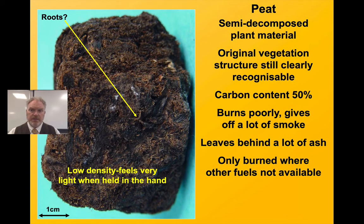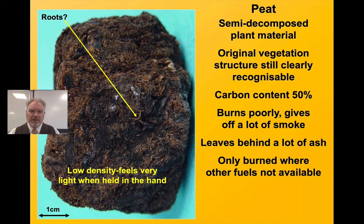This is peat — partly decomposed plant material. You can still see recognisable fragments of plants within this deposit. It's quite low density, with a relatively low carbon content. It does burn, not terribly well, gives off a lot of smoke, although it can have quite a nice smell to it. But there's a lot of waste material. This is burned in places like the west of Ireland and the far northwest of Scotland, where other fuels may be unavailable or very expensive.